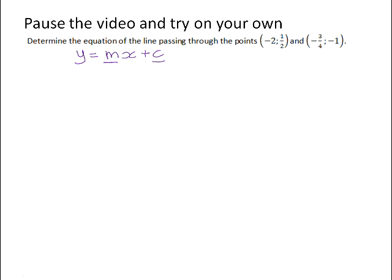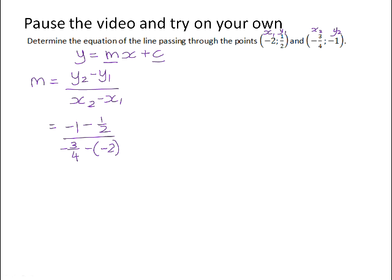There is a formula that you can use to calculate gradient. It is the change in y over the change in x. So if we substitute in our two points here, if we label this x₁ and y₁ and x₂ and y₂, y₂ minus y₁ will be -1 subtract 1/2. x₂ minus x₁ will be -3/4 subtract -2. If you punch that into your calculator, you get the gradient to be -6/5.